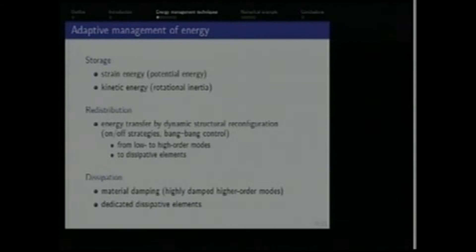We call them adaptive management of energy, because they are based on three steps or phases. So we have storage of energy, either of the potential energy or strain energy of the deforming members of the structure, or of the kinetic energy in the form of rotational inertia of dedicated elements. Then we have the phase of redistribution of energy. Basically, the energy is released or transferred by dynamic structural reconfiguration, either into higher-order structural modes of vibration, or to dissipative elements in an on-off strategy or bang-bang strategy. And finally, we have dissipation of this energy, either by material damping, which is high in higher-order modes, or in dedicated dissipative elements.